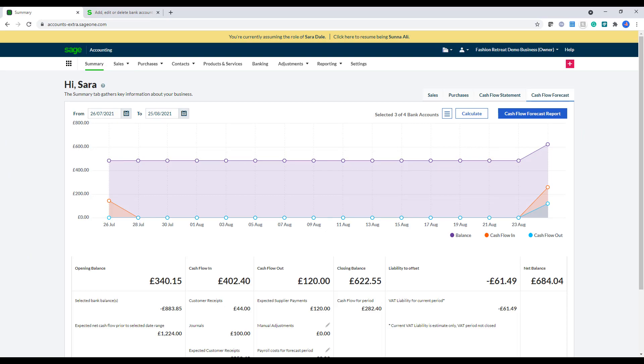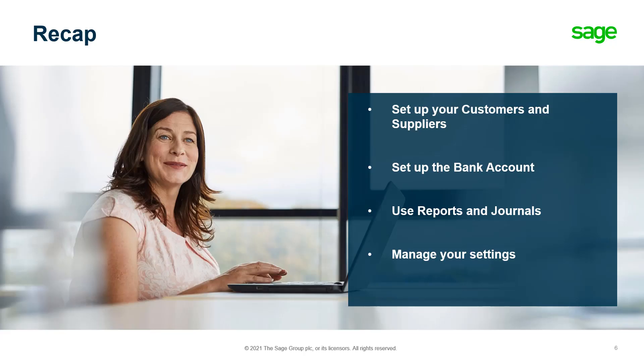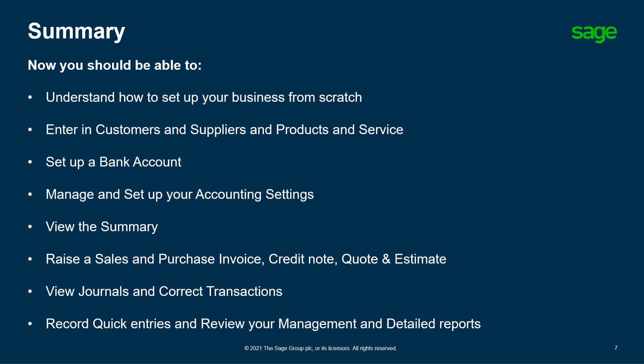Now I'm going to take you back to the presentation. Just to recap, hopefully now you know how to set up your customers and suppliers, set up the bank account, use the reports and journals, and how to manage your settings in business cloud accounting. Let's finish off with the summary. Now you should be able to understand how to set up your business from scratch, enter in customers and suppliers, set up the bank account, manage and set up your accounting settings, view the summary, raise sales and purchase invoices, quotes and estimates, view journals and correct transactions, and record quick entries and review any reports and detailed reports as well.